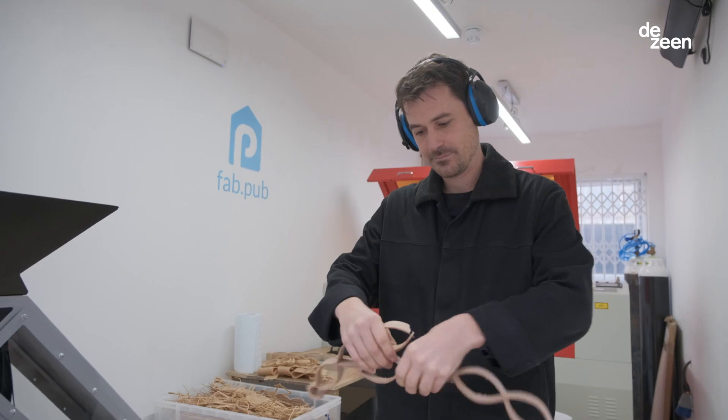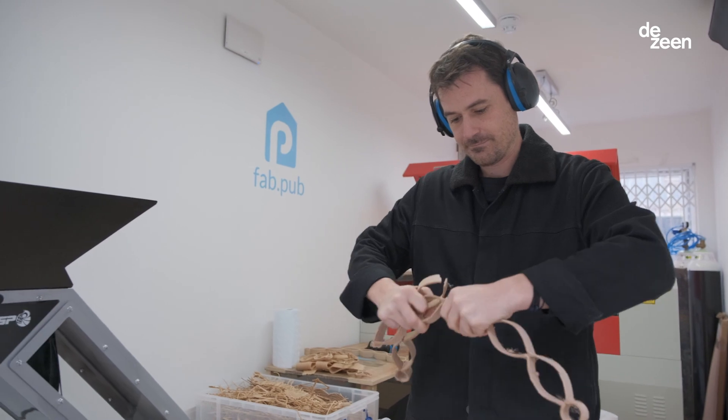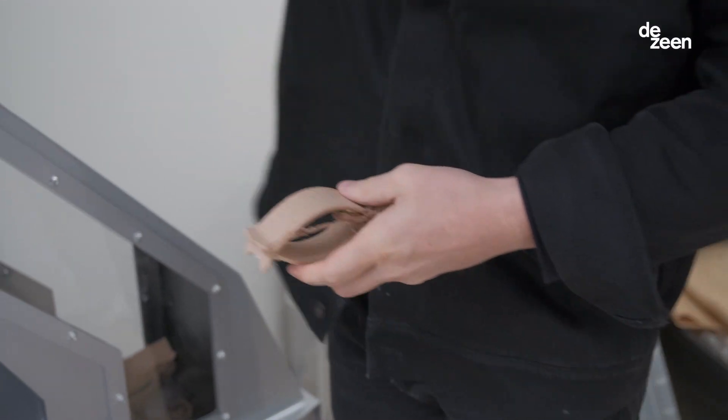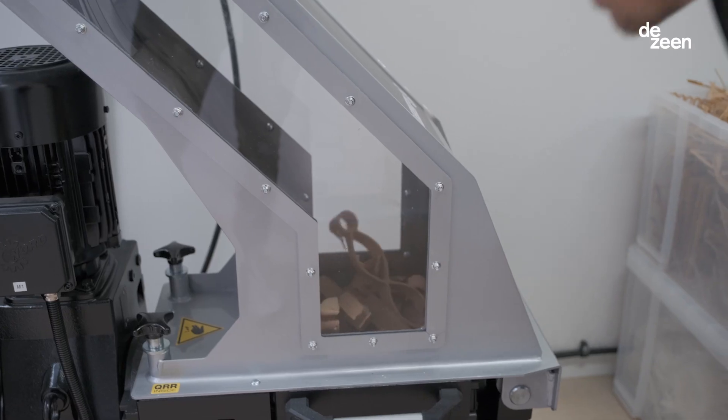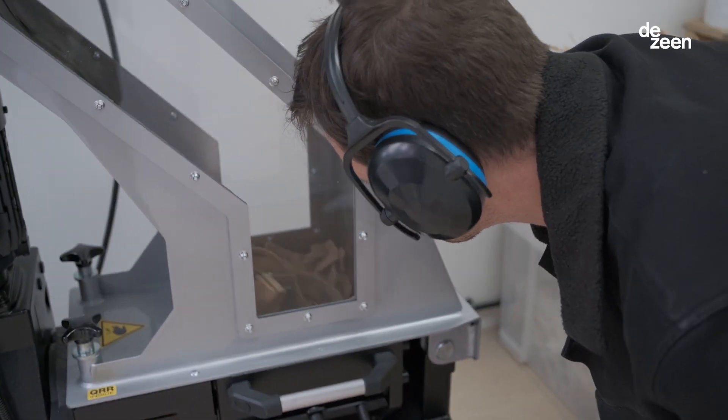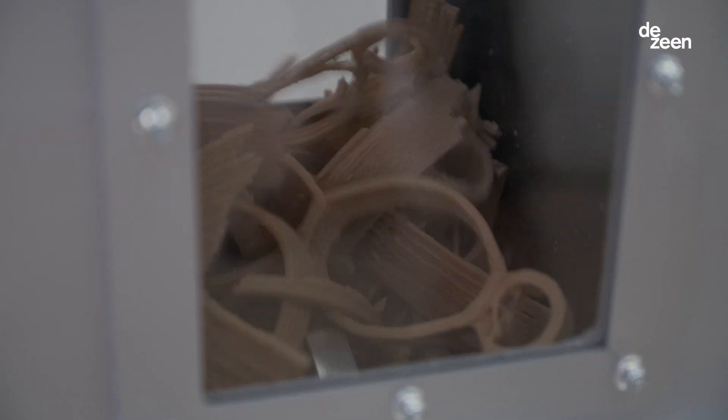There will also be a plastic crusher on site, showing people how recycling can be done on a small scale. The plastic crusher allows us to take a piece that's already printed and bring it back into the pellet form that allows to print again.